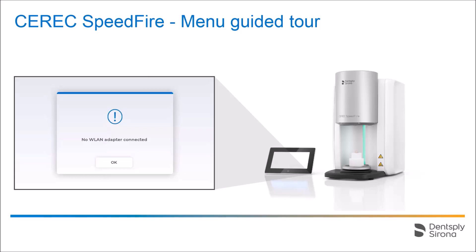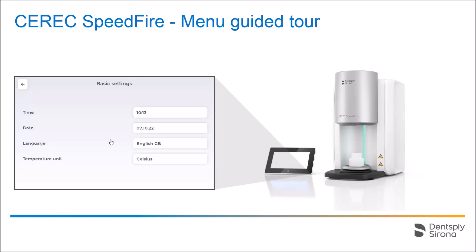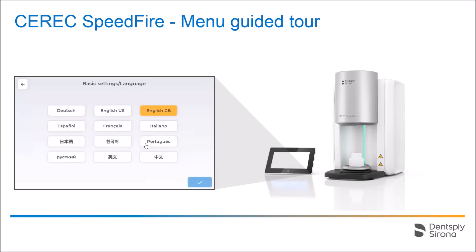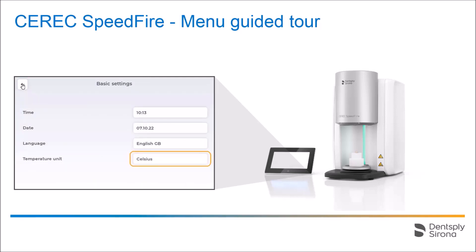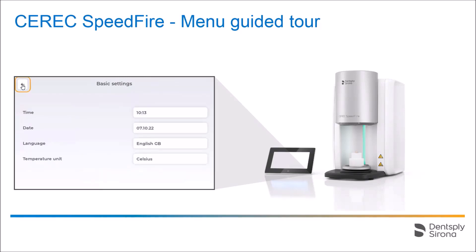Back in the settings submenu, we take a look at the basic settings. Here you can modify the date, time, language, and temperature unit. For demonstration purposes, we tap the language selection button and all available languages will be displayed. If desired, you can switch to a different language. We return to the basic settings overview and take a look at the temperature selection in the next step. Here you can choose between Celsius and Fahrenheit. Without making any modifications, we go back to the overview and leave the basic settings area to return to the settings overview.